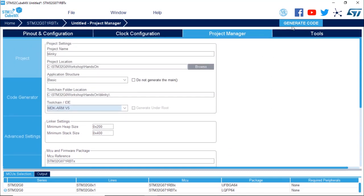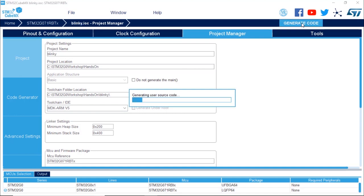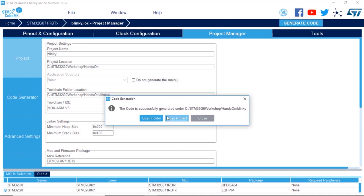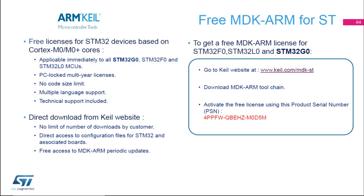Now we can generate the code — click Generate Code in the upper right corner. Once generated, click Open Project in the code generation window. Keil Microvision 5, also known as MDK-ARM, is free of charge for customers using Cortex-M0 and M0+ STM32s. This includes STM32 G0, F0, and L0 — no code size limitations and full debug features. This is why it was chosen for this workshop.